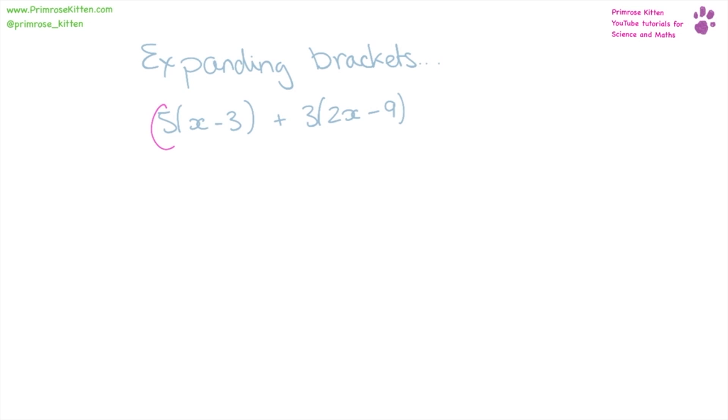So for the first bracket, I'm taking the 5 and multiplying it by everything inside the bracket. We'll do the same for the second one. 5 times x gives us 5x, 5 times minus 3 gives us minus 15.